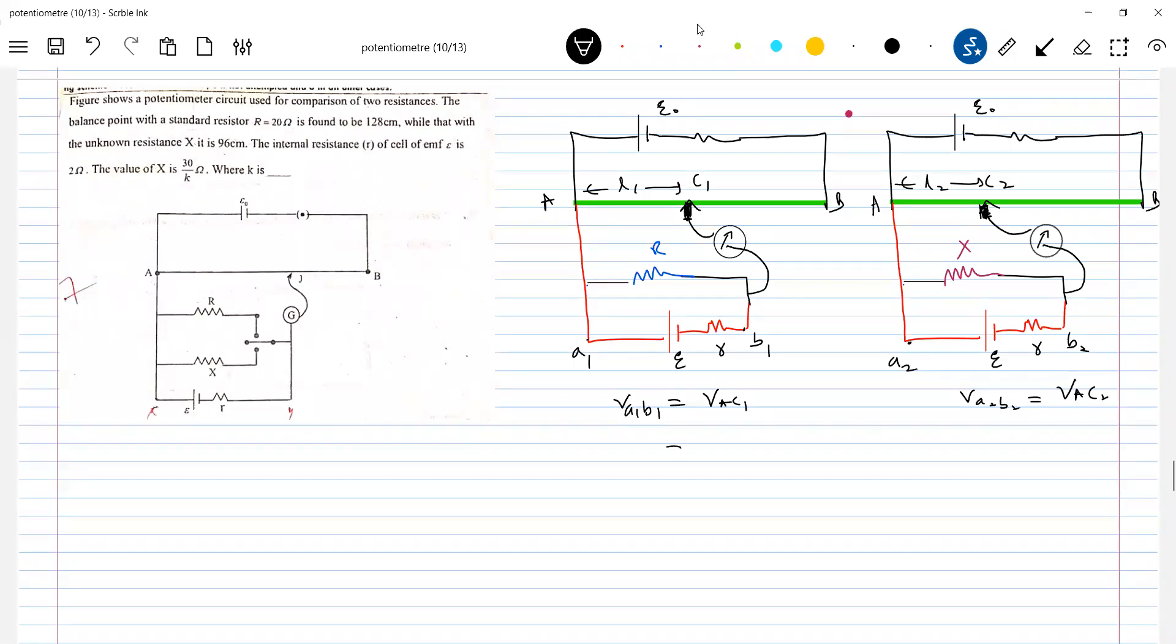So VA2 B2 should be equal to VAC2. So VAC1, we know, is I lambda L1, and I lambda L2. Now, how to get that? So first formula is the standard EMF by VA1 B1 into R. Next, this will be EMF by VA2 B2.